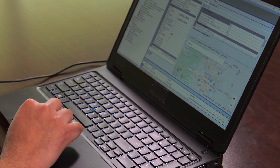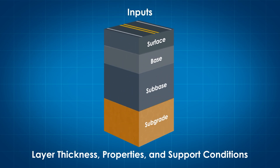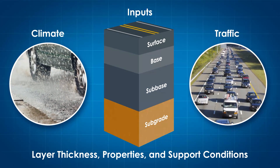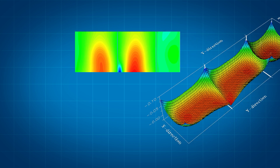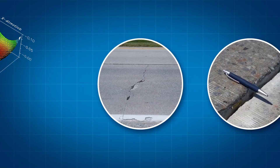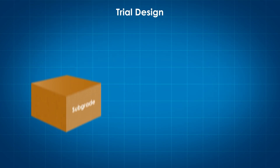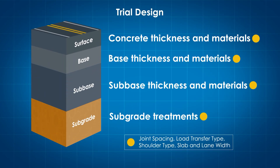To accurately model pavement performance, design software calculates structural responses for a range of traffic loading as well as climatic and subgrade conditions that the pavement is anticipated to encounter. For the trial pavement design, these structural responses are used to model the progression of key pavement distresses and smoothness loss over time. The outputs are the basis for checking the adequacy of a trial design.